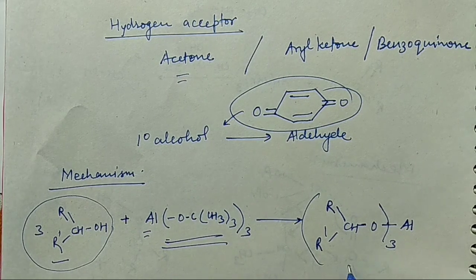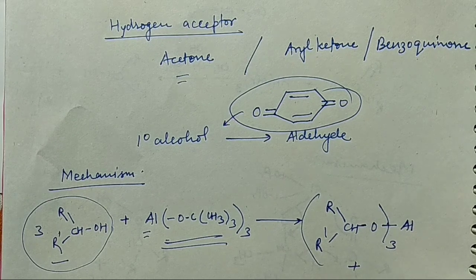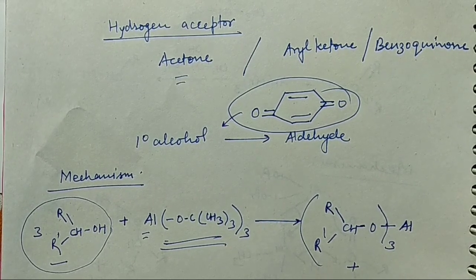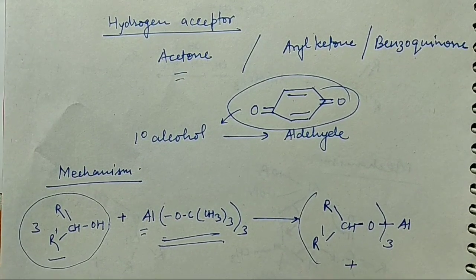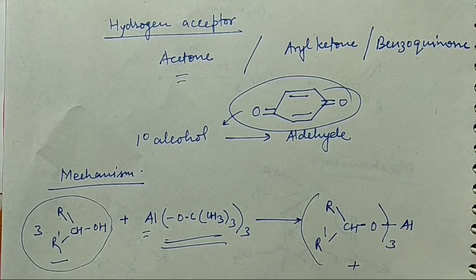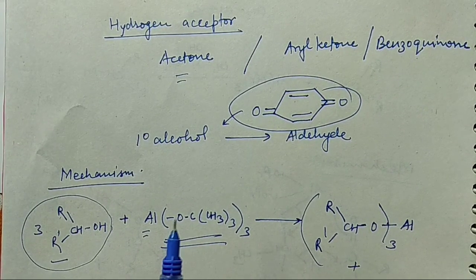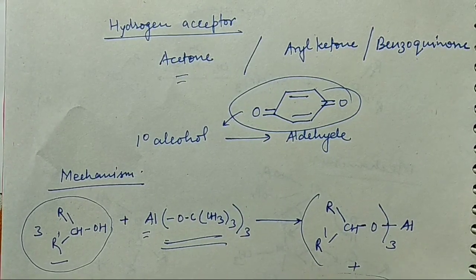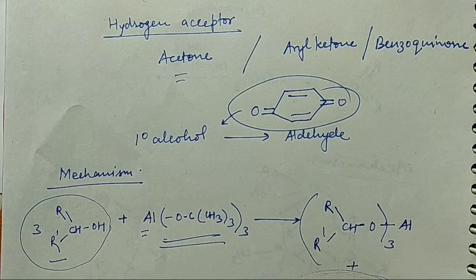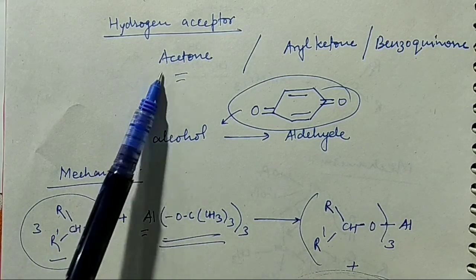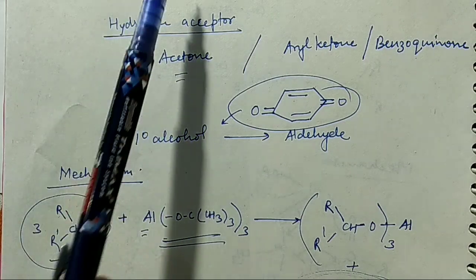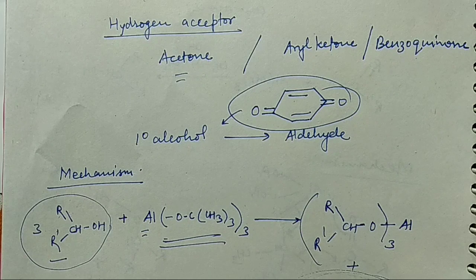The displaced group becomes (CH₃)₃COH — tertiary butyl alcohol — which is not further oxidized during the reaction. If we use Aluminium Tri-Isopropoxide instead, we get isopropyl alcohol which is further oxidized to acetone. That acetone is then available during the reaction as the hydrogen acceptor.